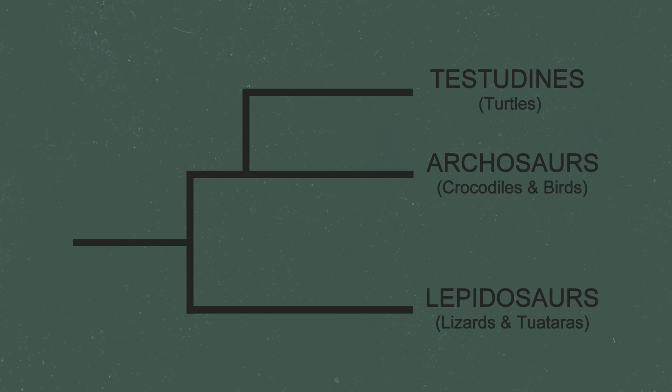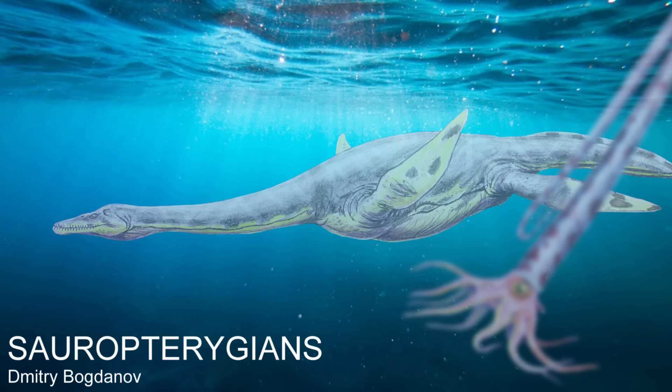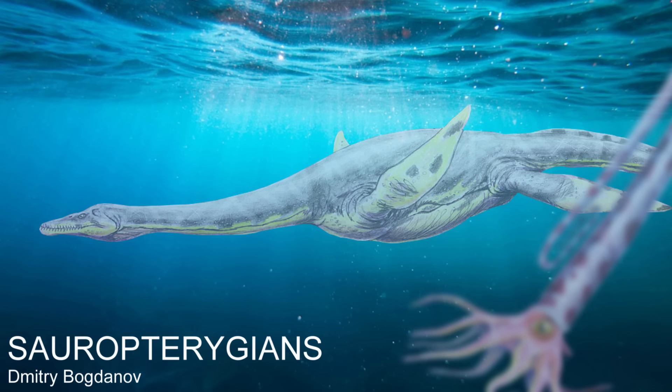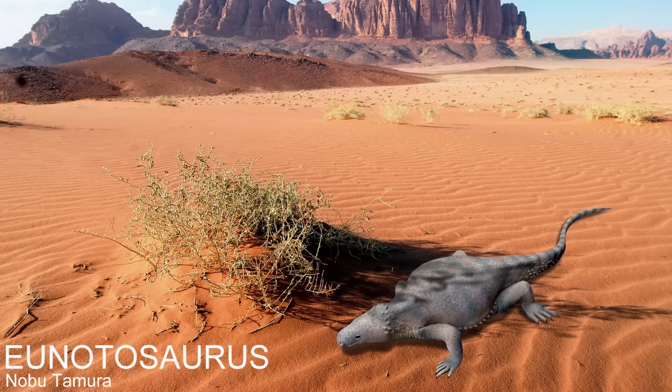Which group of diapsids turtles belong to is not yet known. One study has shown they are most closely related to crocodiles and birds. However, the most popular theory places them closest to lizards and tuataras — specifically within a group known as the sauropterygians, which actually contains plesiosaurs.